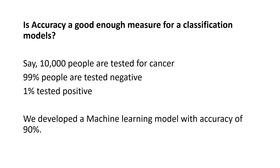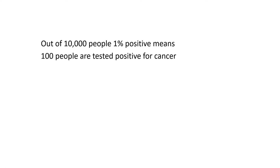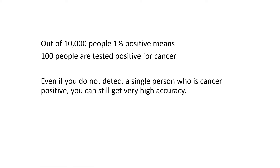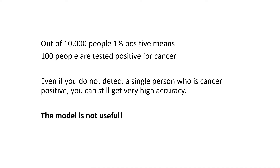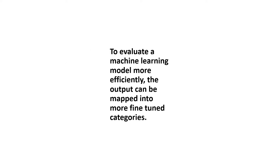99 people tested negative, so even if we do not develop any machine learning model and just say that all 100 people tested negative, we will still be 99% accurate. In that case, this machine learning model is not doing any good job. Out of 10,000 people, one percent positive means 100 people tested positive for cancer. Even if you do not detect a single person who has cancer, you can still get a very high accuracy score. So when we have this kind of skewed data, accuracy score alone is not good.